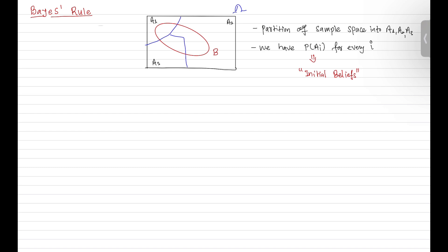By using the total probability theorem, we can find the probability of some event under different scenarios. Now let's assume that under each scenario we also have the probability of event B. We know the probability of event B given each scenario, for every i.